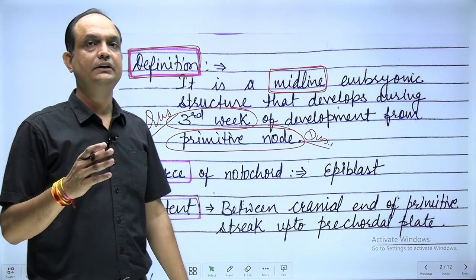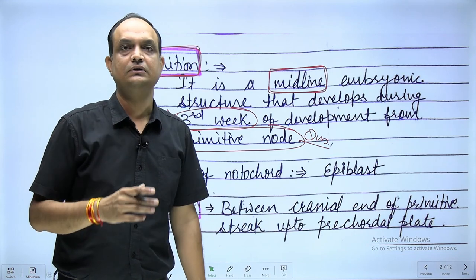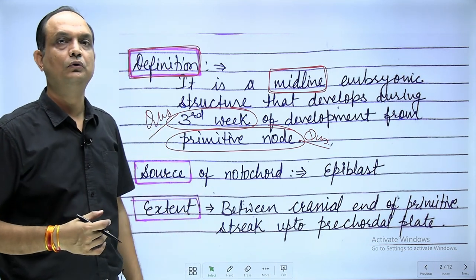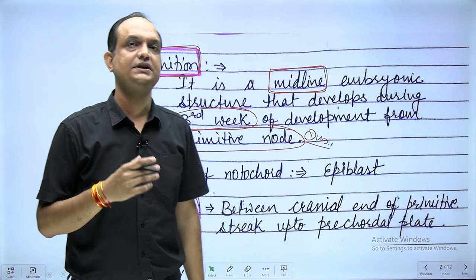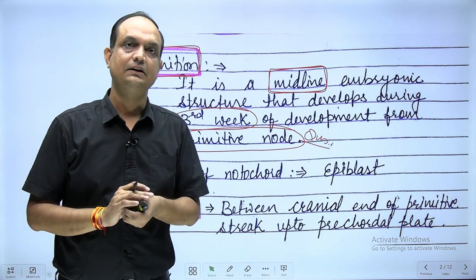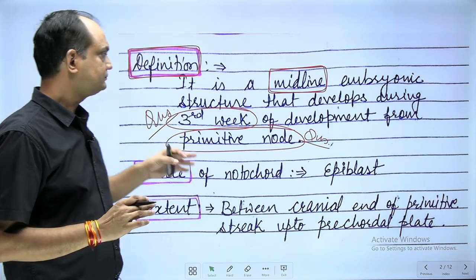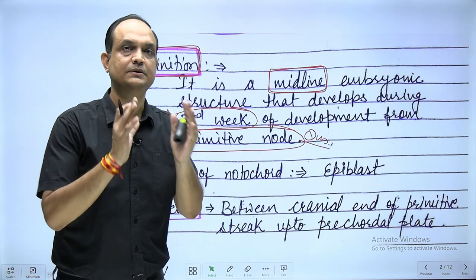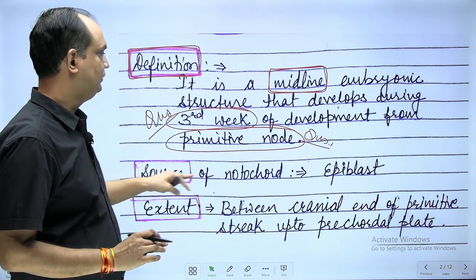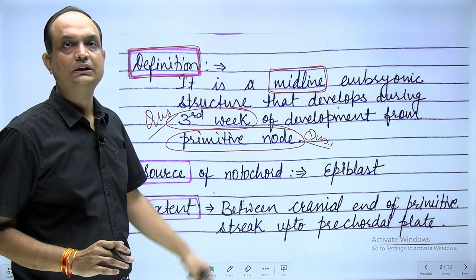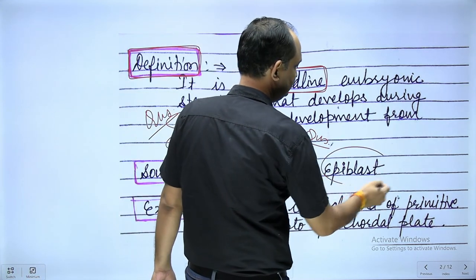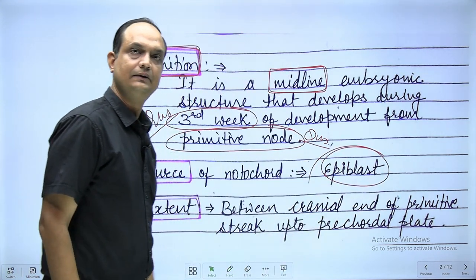When you are reading gastrulation, you know about the primitive streak and primitive node. Both develop from the epiblast cell layer. The primitive node, which is a mass of epiblast cells, is going to form the notochord — meaning the cells of the notochord also come from the epiblast cell layer.